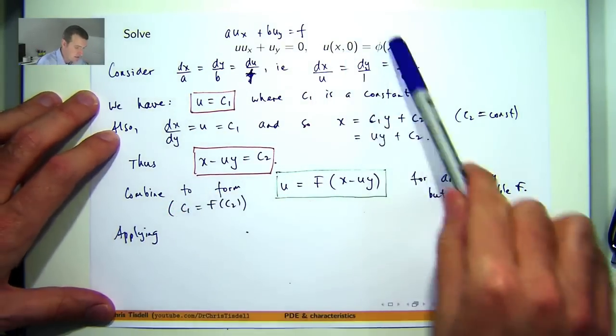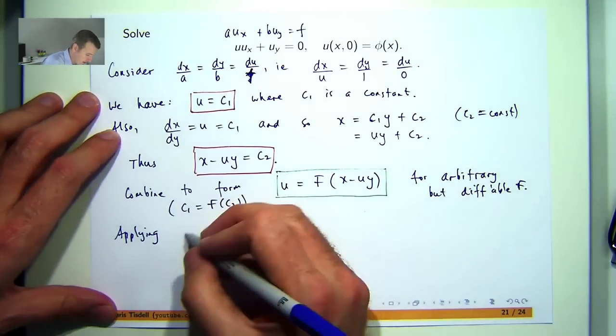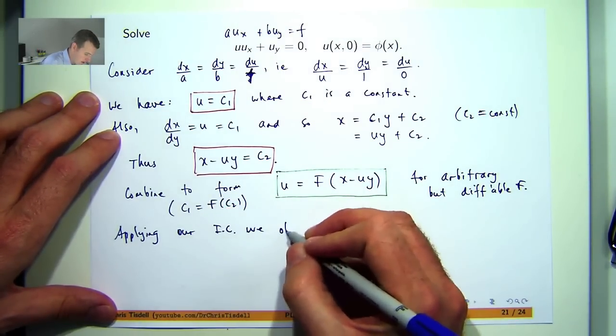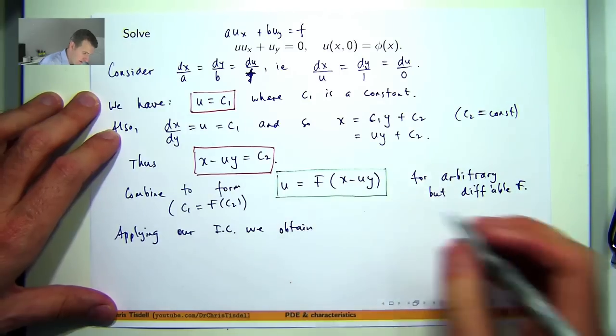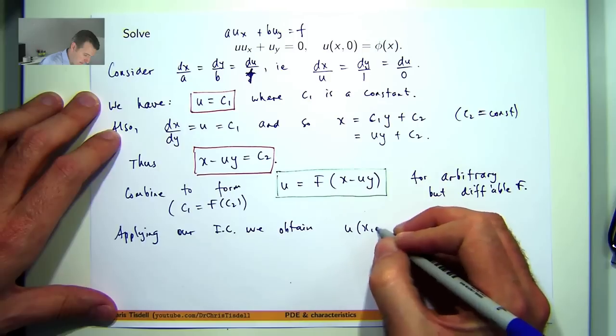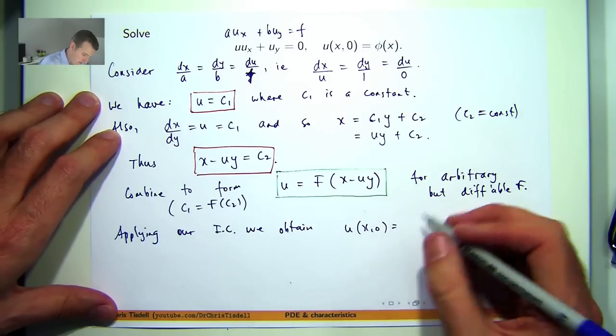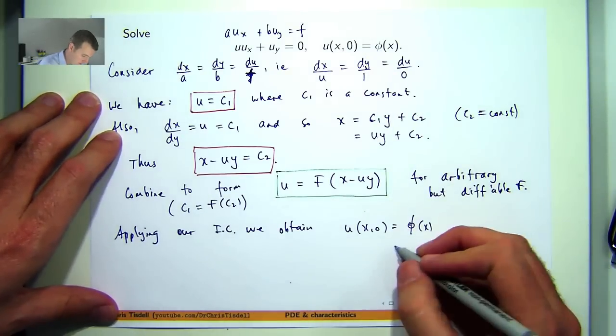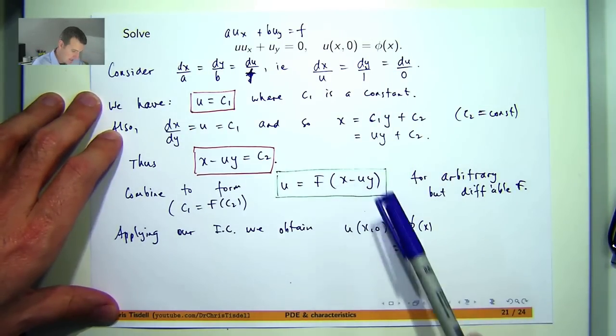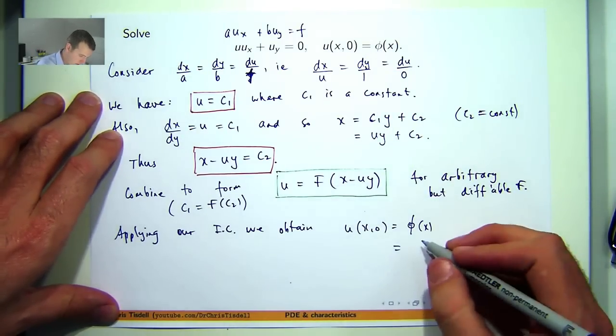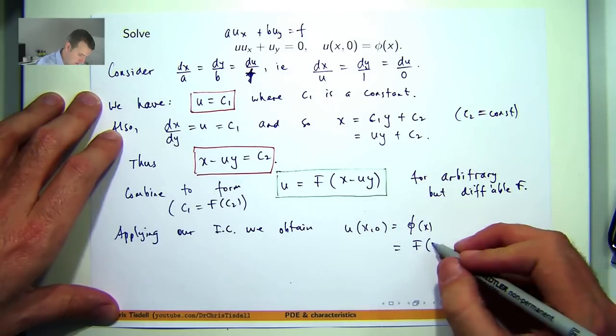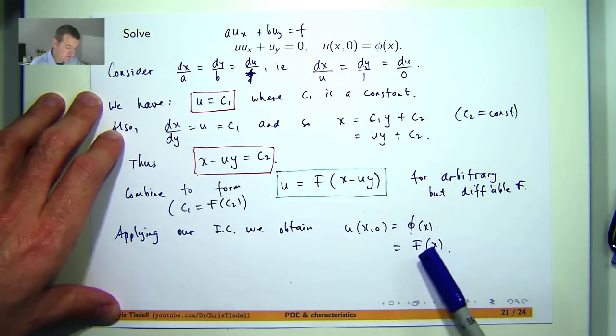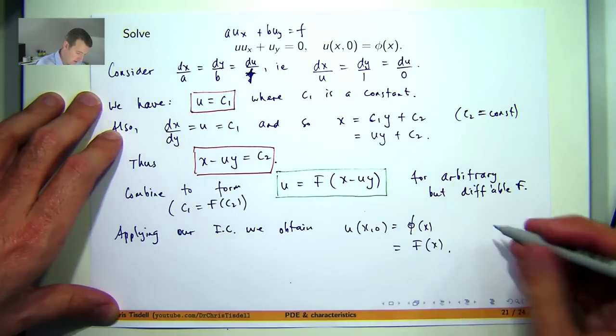So this is known as initial condition or Cauchy data. IC means initial condition. It's phi of x. Now phi isn't given but just think of it as some function of x. If I go in here and I replace y with 0, I'll get x minus 0 which is just this. So if we compare these two, we know that the function big F is just the phi function.